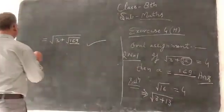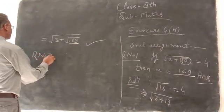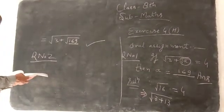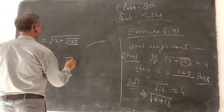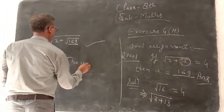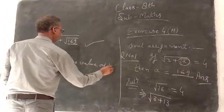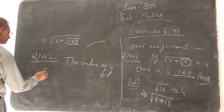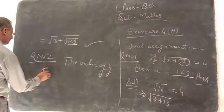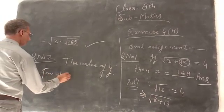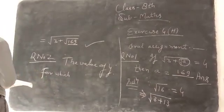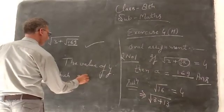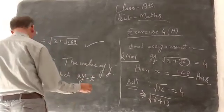Question number 2. This is a very good question. The value of Y for which Y square minus t equal to 0.